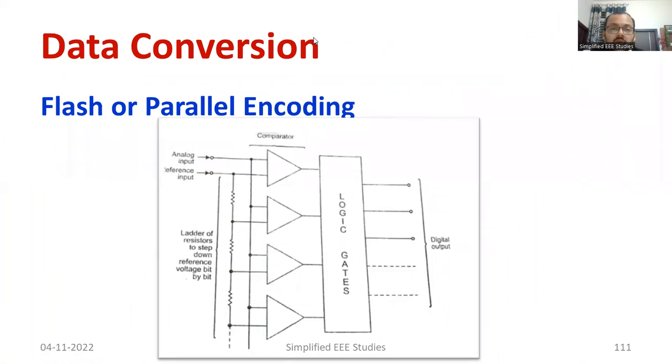First of all, everybody can observe the diagram. There is a schematic representation of flash or parallel encoding. The main components are the comparator. You can use an operational amplifier as a comparator, op-amp or operational amplifier.